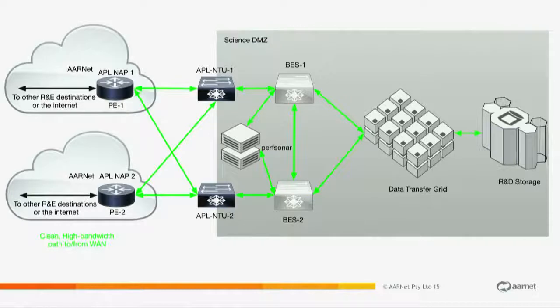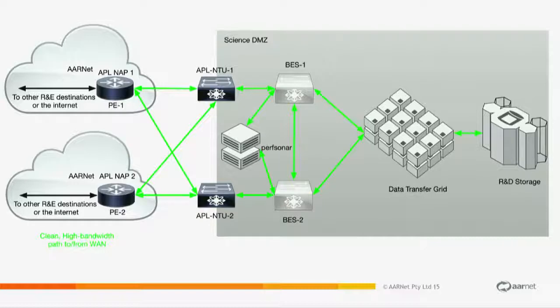One DTN may not be enough — you can actually build grids of these and connect them to your research storage in the back. You can push lots and lots of data by building data grids and run different types of applications: GridFTP, Aspera, WGET, Curl, threads — a whole heap of different stuff. Your science community uses what the community uses, not what you tell them to do. What does your research community want? That's a question that needs to be answered before you get too far into this.